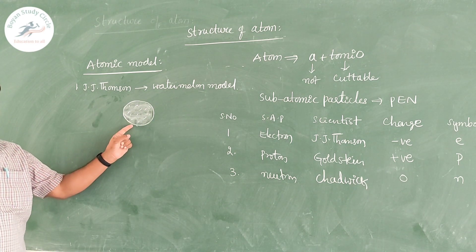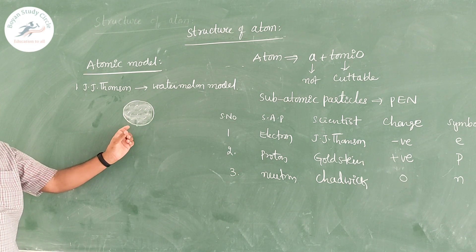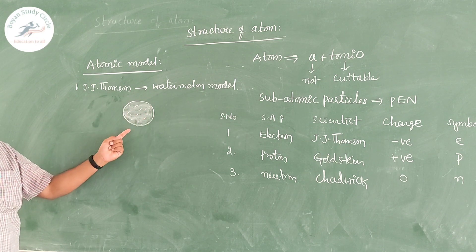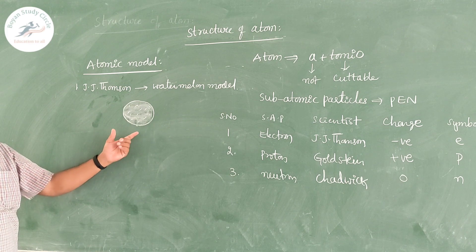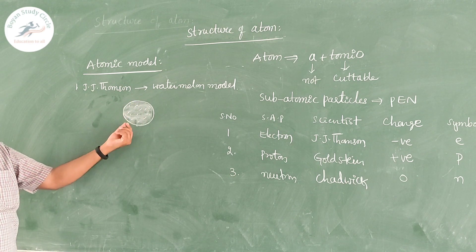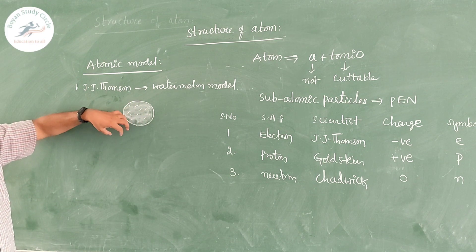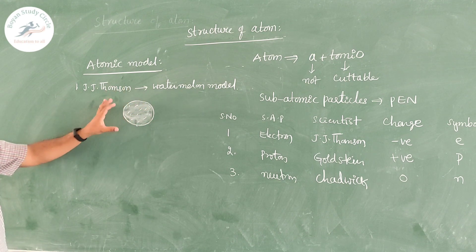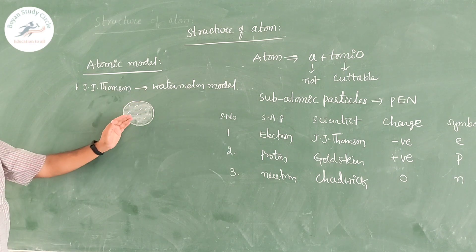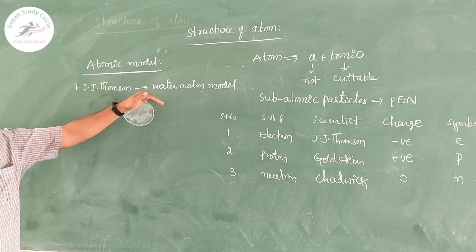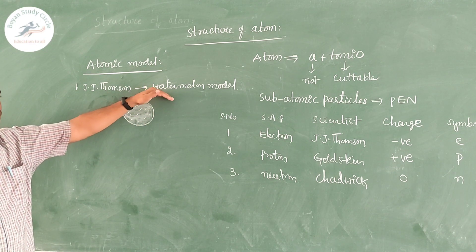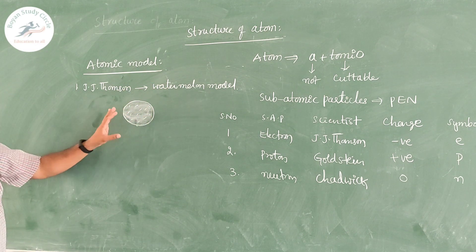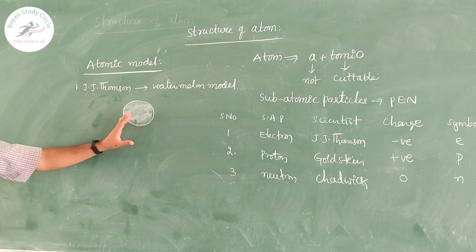Children, see this structure — it just looks like the watermelon. When you cut the watermelon, you see the red pulp inside and the seeds are located or embedded inside the watermelon. In the same way, he assumed the existence of positive and negative charges. That is why this model is also called the watermelon model. But it is just an assumption — there is no practical proof for this.